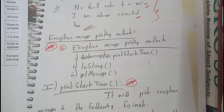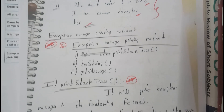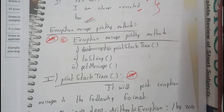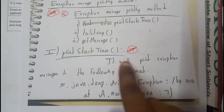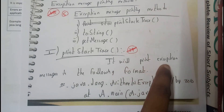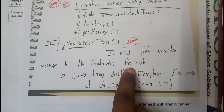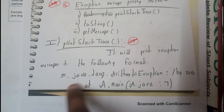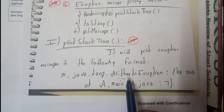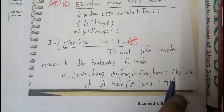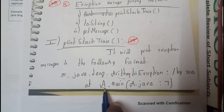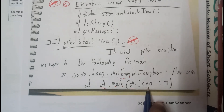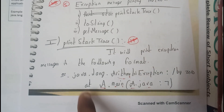The first method will be printStackTrace, the second method will be toString, and the third method will be getMessage. So let us start with printStackTrace. It will print the exception message in the following format: package name, exception name, exception message, class name, method name (main or not), file name, and line number. This is all the detail that printStackTrace will be printing.